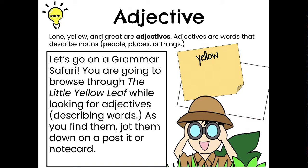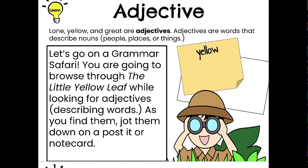An adjective is a word that describes something. So lone, yellow, and great are all adjectives. Adjectives describe nouns — those are people, places, or things. We are going to go on a grammar safari, looking for some things in your book, The Little Yellow Leaf.